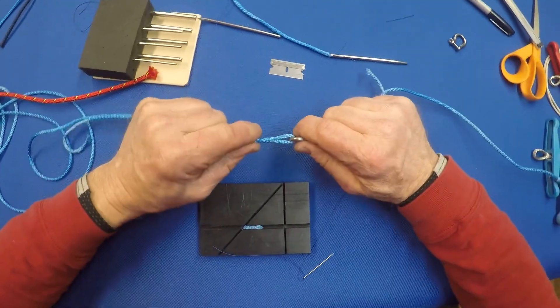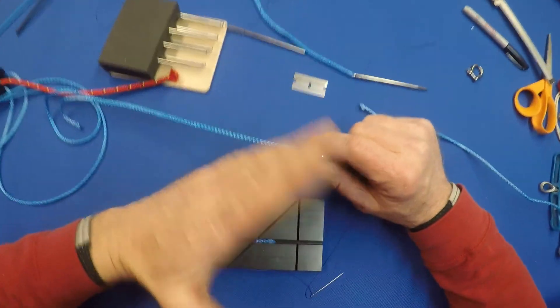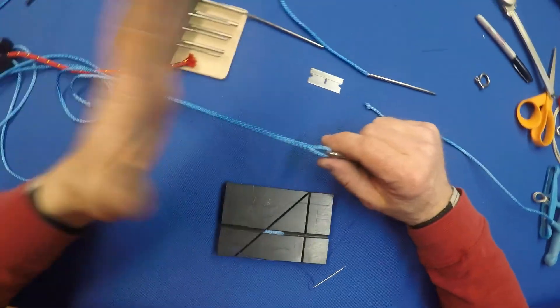See, we're left with that much then. So, it gives you a way to be able to adjust the bridles. Of course, you want to adjust them evenly on both sides to keep the spinnaker pole in the middle of the boat.